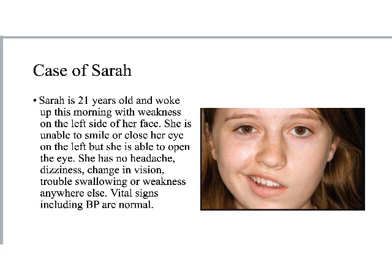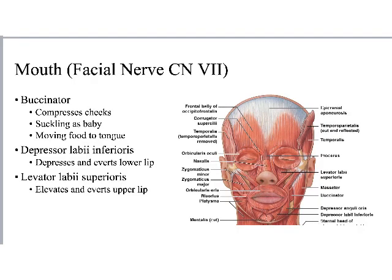Most muscles in the face are innervated by the facial nerve, cranial nerve 7. When we get to the nervous system unit, we'll see that cranial nerve 7 gives sensation to most of the face and innervates nearly all of the facial muscles. I will point out the exceptions as we go along, but in general, most of these muscles are controlled by the facial nerve.